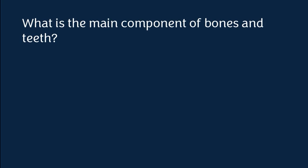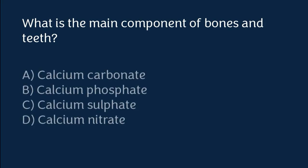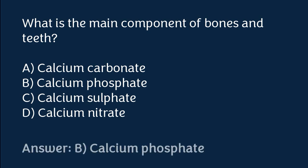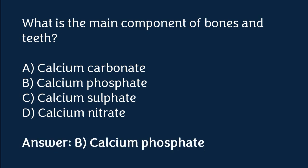What is the main component of bones and teeth? Calcium carbonate, calcium phosphate, calcium sulfate, or calcium nitrate. The correct answer is option B. Calcium phosphate is the main component of bones and teeth.